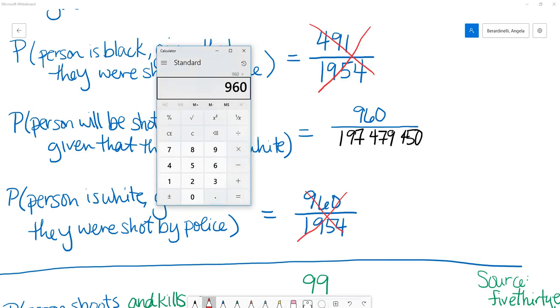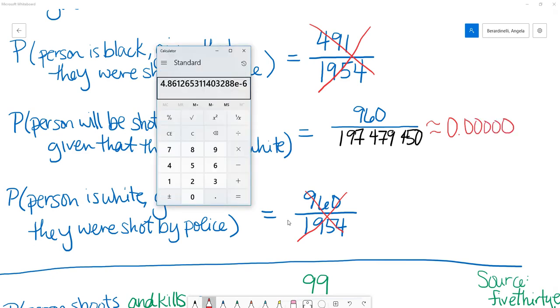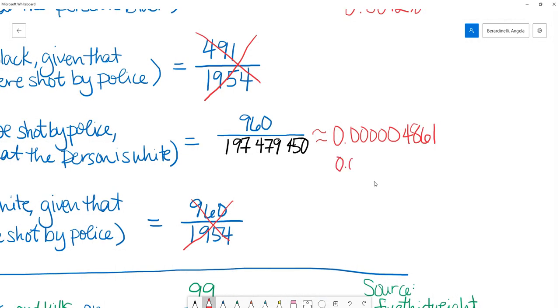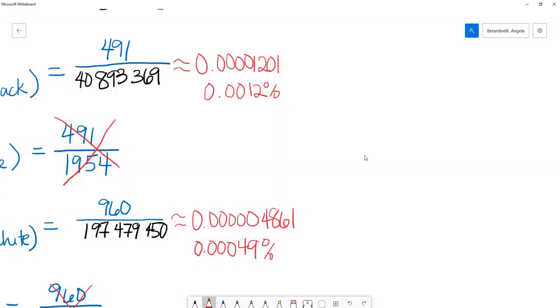So 960 divided by 197,479,450. So this probability is approximately 0.00004861, or about 0.000049%. And so going back to the idea from lecture number three in this module,